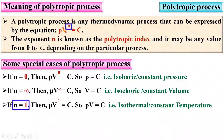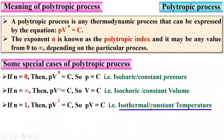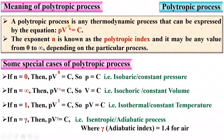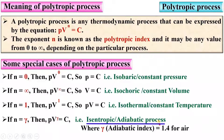If you put n equal to 1 in this equation, it will be PV raised to 1 equals constant, so PV equals constant — this process is known as the isothermal or constant temperature process. Next, if you put n equal to gamma, the adiabatic index, it becomes PV raised to gamma equals constant, which is the governing equation of the isentropic or adiabatic process, where gamma is 1.4 for air. These are all special cases of the polytropic process.